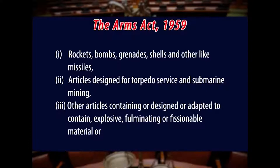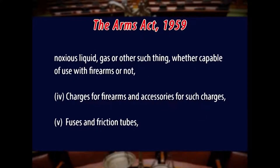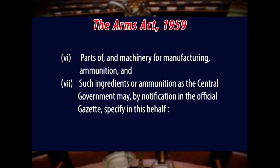Second, articles designed for torpedo service and submarine mining. Third, other articles containing or designed or adapted to contain explosive, fulminating, or fissionable material, or noxious liquid, gas, or other such thing, whether capable of use with firearms or not. Fourth, charges for firearms and accessories for such charges. Fifth, fuses and friction tubes. Sixth, parts of and machinery for manufacturing ammunition. And seventhly, such ingredients of ammunition as the central government may by notification in the official gazette specify in this behalf.